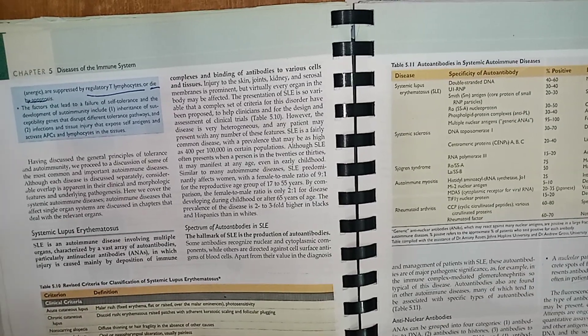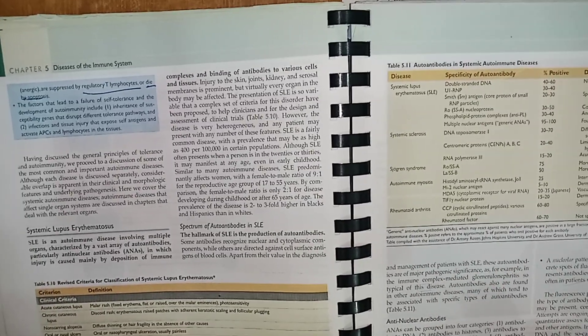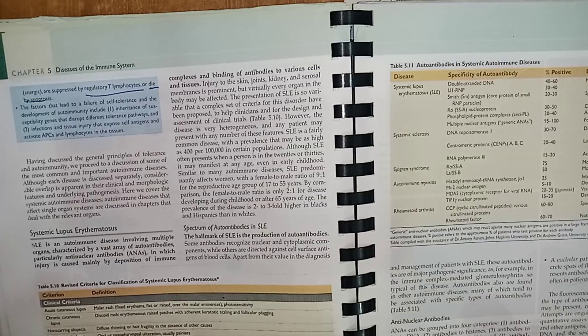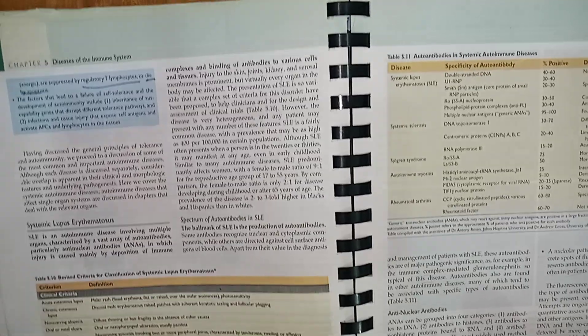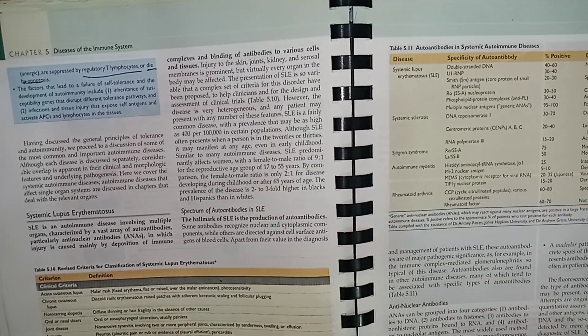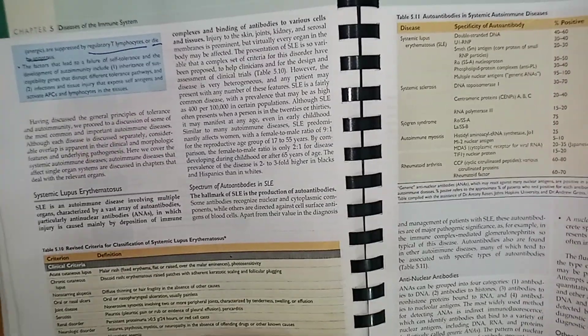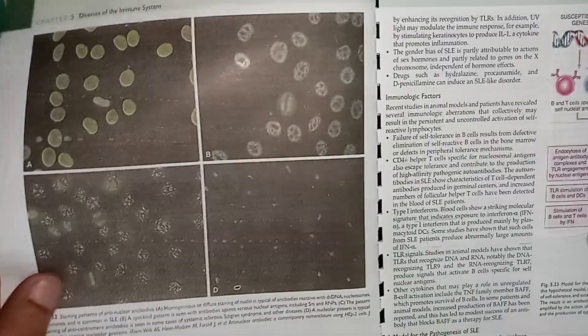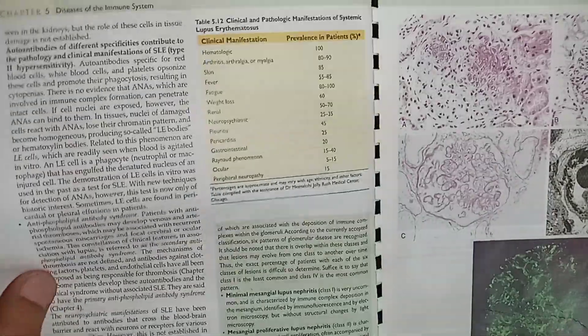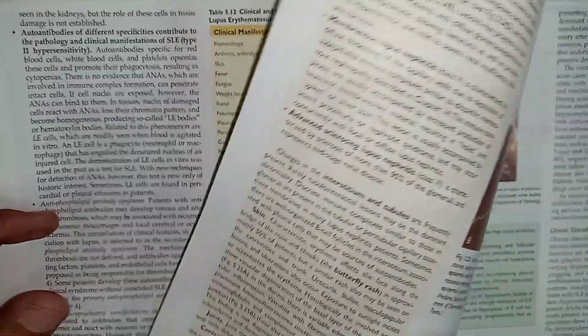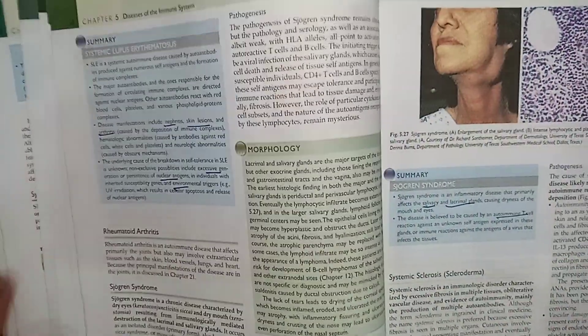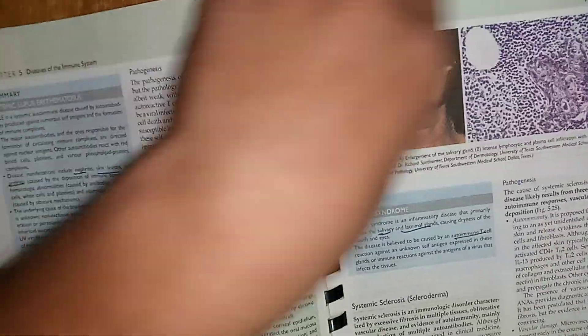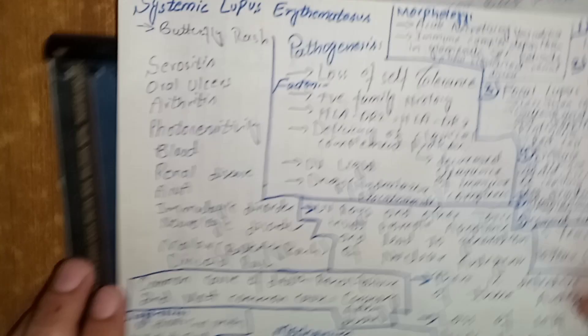In this video we are going to discuss systemic lupus. In Robin's it is written quite extensively, ranging about 10 pages, and I have tried to summarize it. So let's begin with the summarization.